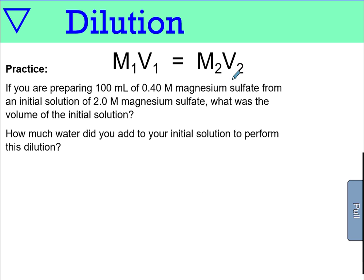If you're preparing 100 mils of 0.4 molar magnesium sulfate from an initial solution of 2 molar magnesium sulfate, what was the initial volume of the solution? So in this question, we're going to use our dilution formula. And we have our final volume and molarity here, 100 mils, 0.4 molar. We need to convert this to liter, so it's 0.1 liter. And this is our initial molarity. So we're going to be finding our initial volume.